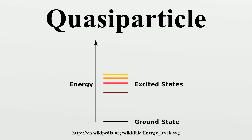Usually, an elementary excitation is called a quasi-particle if it is a fermion, and a collective excitation if it is a boson. However, the precise distinction is not universally agreed upon. There is a difference in the way that quasi-particles and collective excitations are intuitively envisioned. A quasi-particle is usually thought of as a dressed particle — built around a real particle at its core, but whose behavior is affected by the environment. A standard example is the electron quasi-particle: a real electron in a crystal behaves as if it had a different mass. On the other hand, a collective excitation is imagined as a reflection of the aggregate behavior of the system, with no single real particle at its core. A standard example is the phonon, which characterizes the vibrational motion of every atom in the crystal.